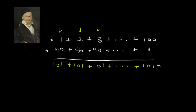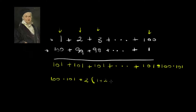All these columns would add up to 101. And how many times do we have 101? Well, we have 100 columns. So this is 100 times 101. Now this number, 100 times 101, is actually 2 times the sum he wanted to solve, because he summed 1 to 100 here and here.